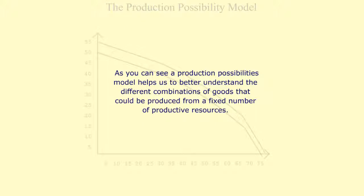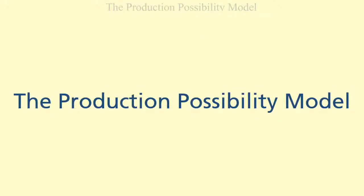As you can see, a production possibilities model helps us to better understand the different combinations of goods that could be produced from a fixed number of productive resources. You have completed this activity, the production possibility model.